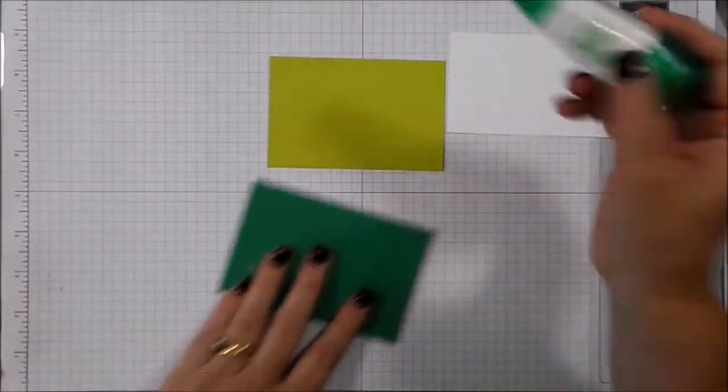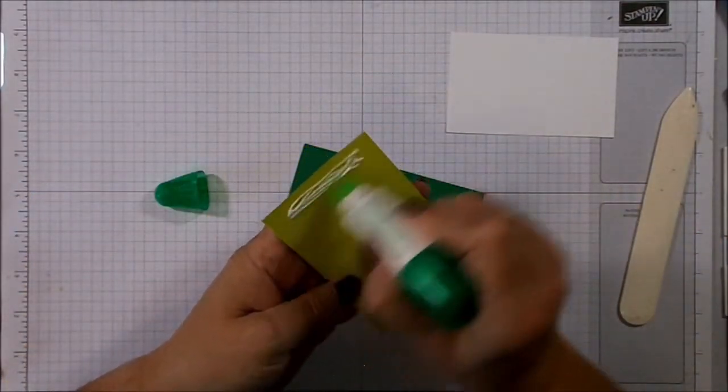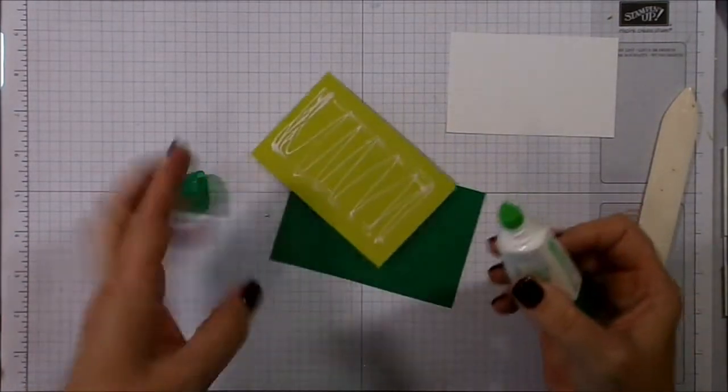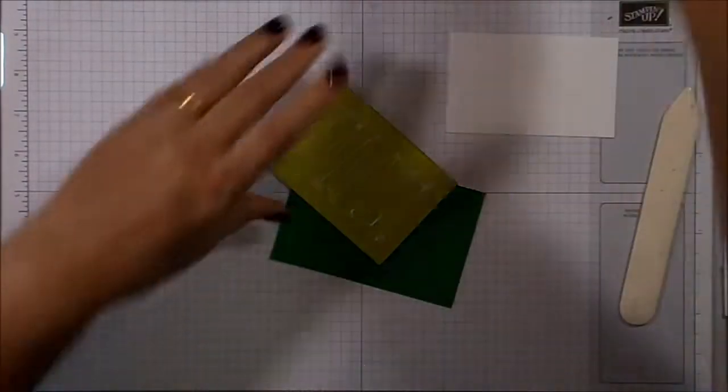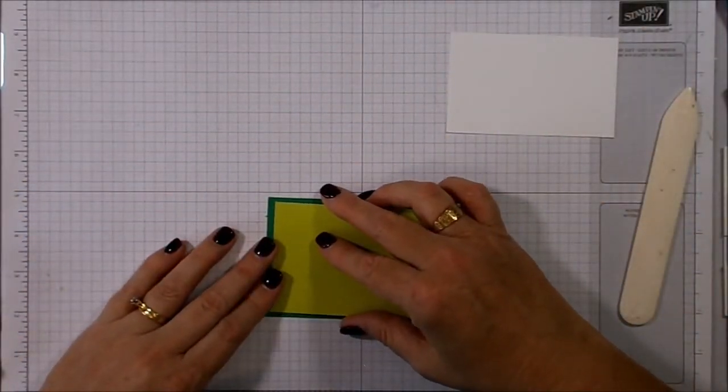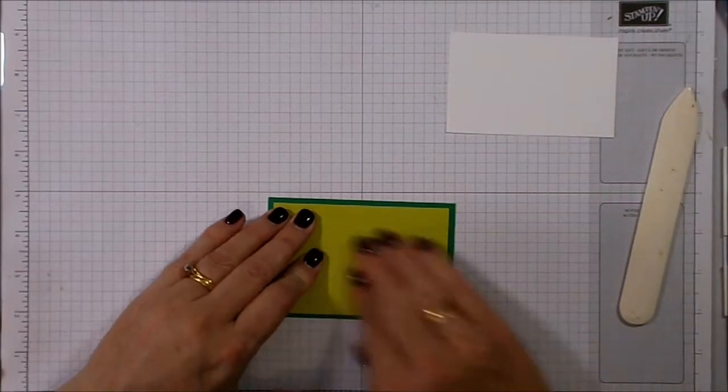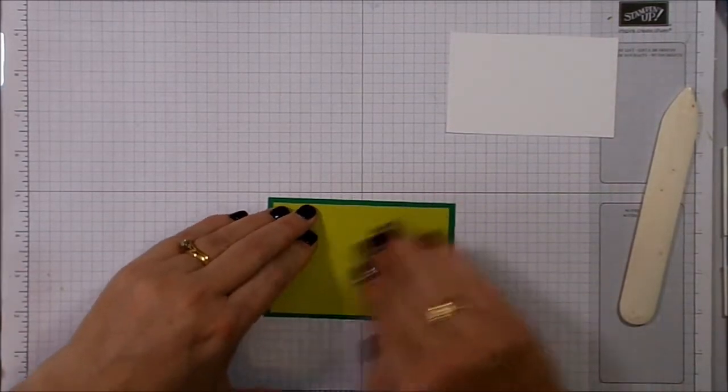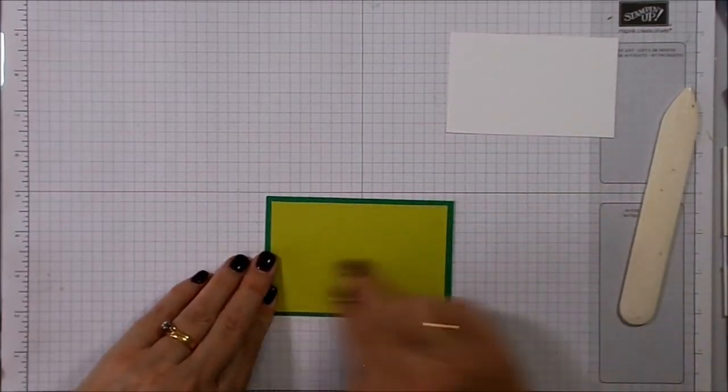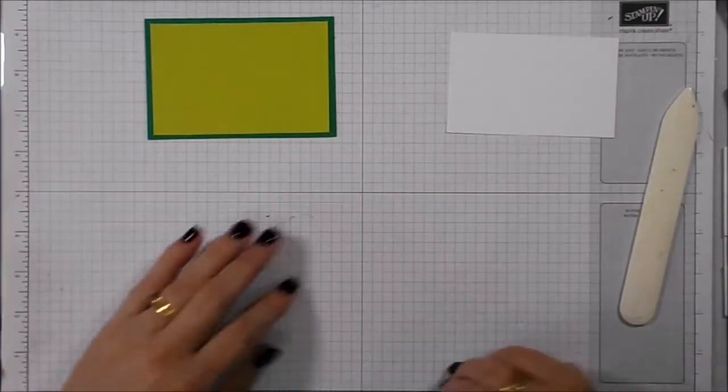So what I'm going to do, because it's colored card stock and it's a little bit thicker than our Whisper White, so the Tombow isn't going to show through on the colored card stock, and besides, it's going to be hidden anyway. I'm just going to use some Tombow on the back of this, just so that I get the border even all the way around. Just give that a bit of a smooth out. And that'll just press the glue around underneath that layer.